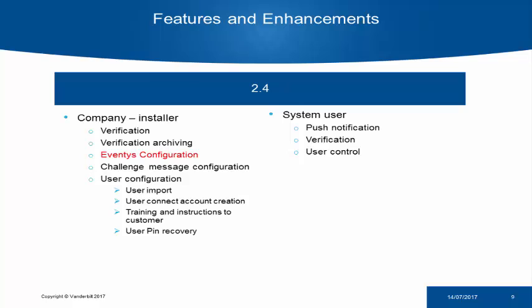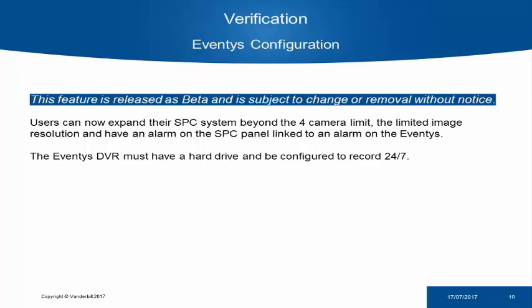Next, we move on to Aventus configuration. This is part of verification. As SPC has always been limited by four cameras connected to a device, this has limited certain sites. What we have achieved with SPC Connect 2.4 is the ability to port forward an Aventus and then add it to SPC Connect. This allows us to use the Aventus video streams as verification zones. In order to configure this, you do have to port forward the Aventus.